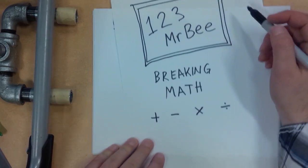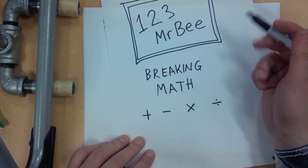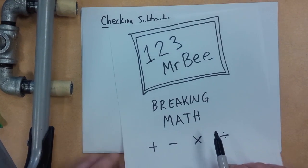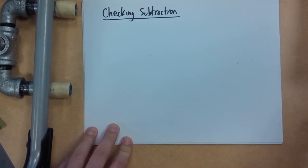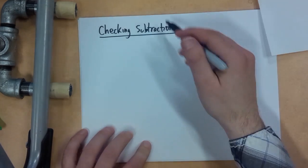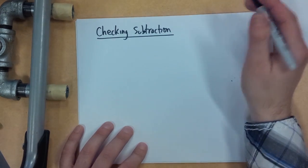Hey everybody, it's 123MrB here with the breaking math program, trying to do some crazy math kind of things here. Let's check it out. So this video is going to be about checking our subtraction to make sure that we're correct.